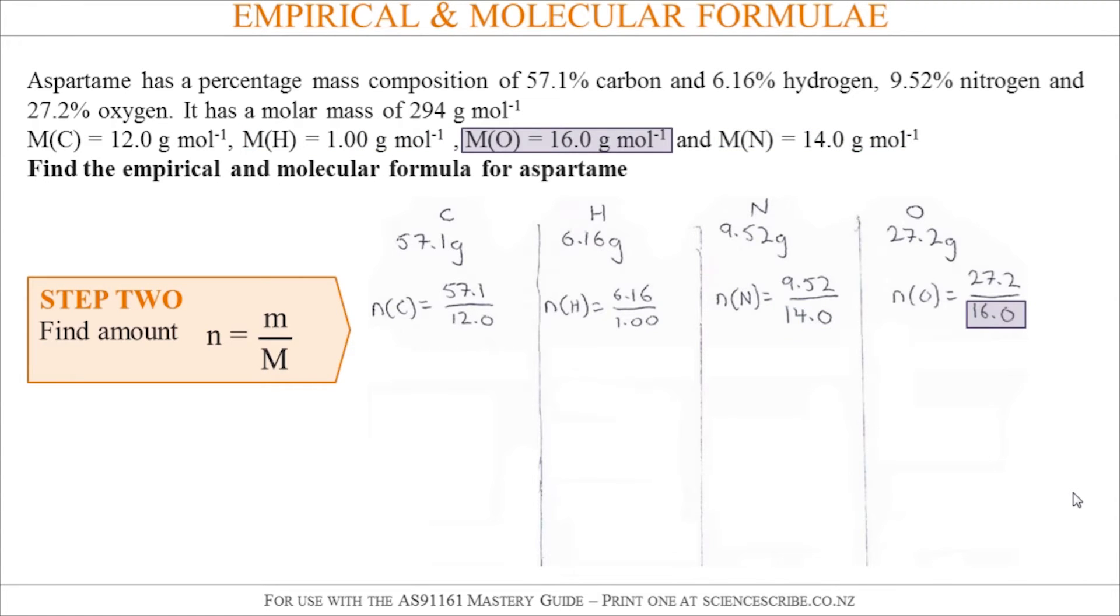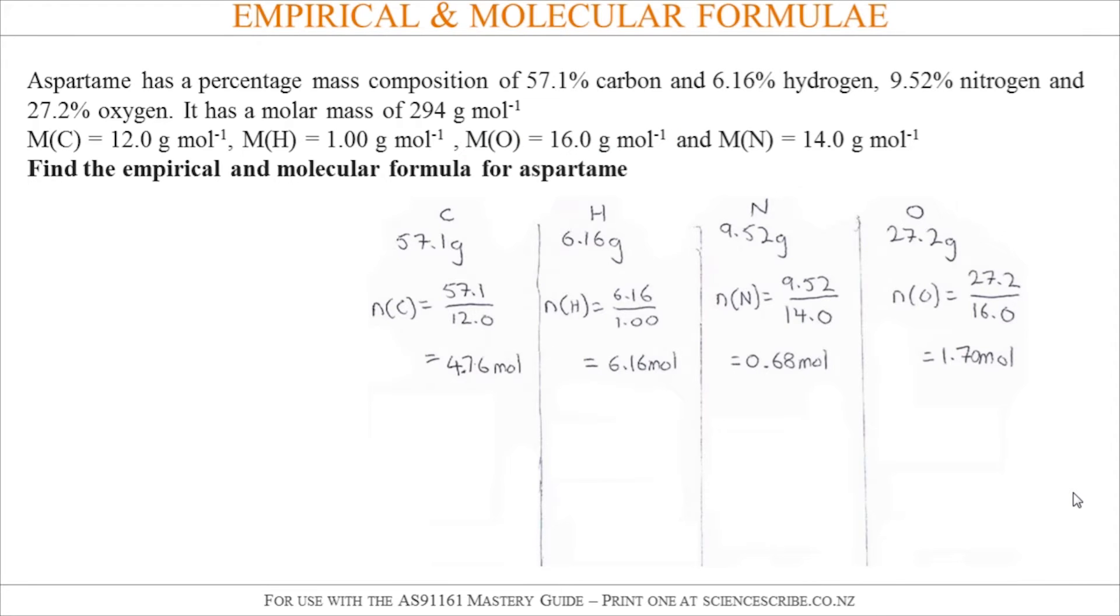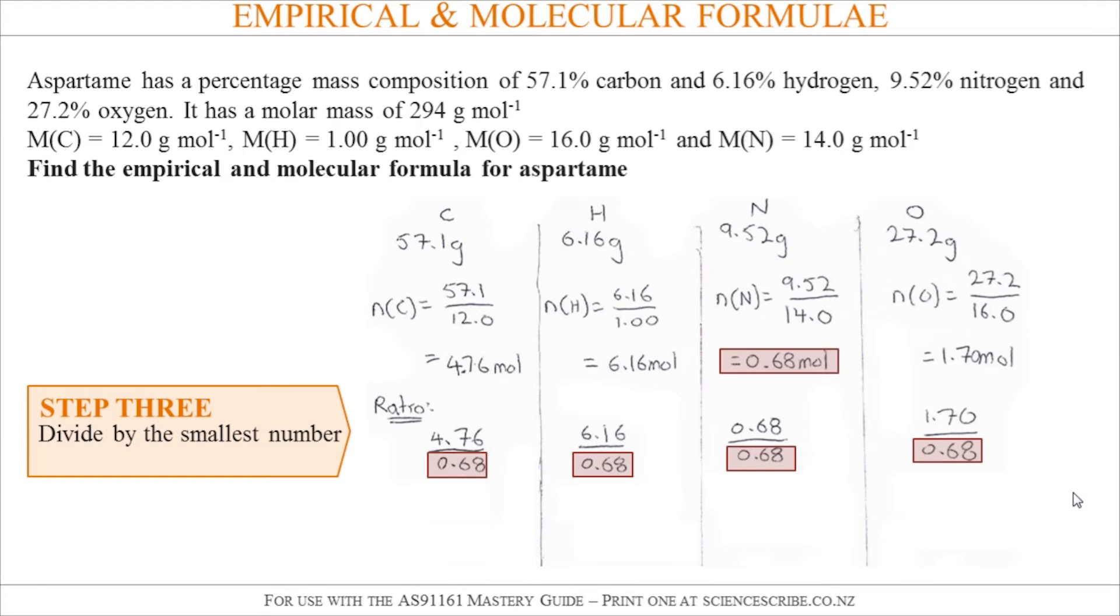Hit equals on your calculator. That gives out a number of moles. I'm presenting all my answers to three significant figures here. After that we look at all of those numbers we just calculated and we look for the smallest one and divide every single number by that smallest one, and that gives us a ratio.